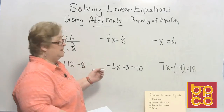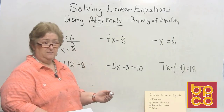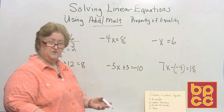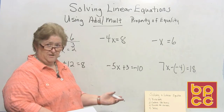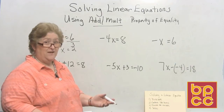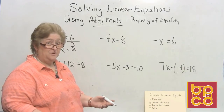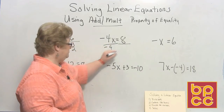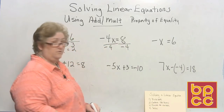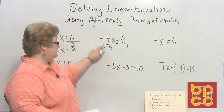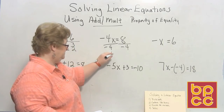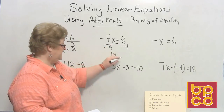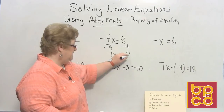On this one, I have negative four x equal eight. I don't have to move anybody, but I do have to solve for a positive one x, and I can't do that with a negative four sitting there. So we need to divide both sides by the number attached to that x — divide both sides by negative four. Remember in division, a negative into a negative is a positive, and a negative into a positive is a negative. So four into eight is two, but it is a negative two.